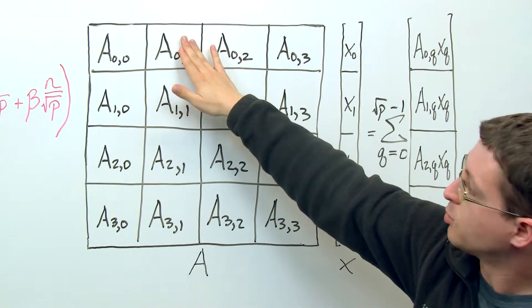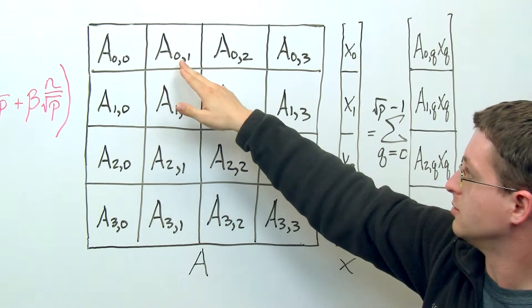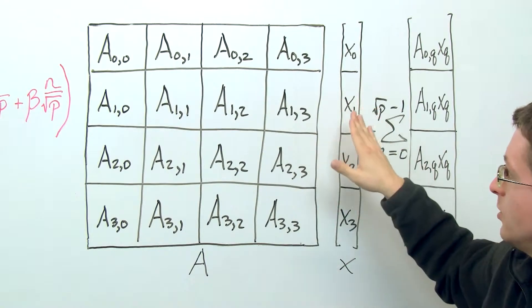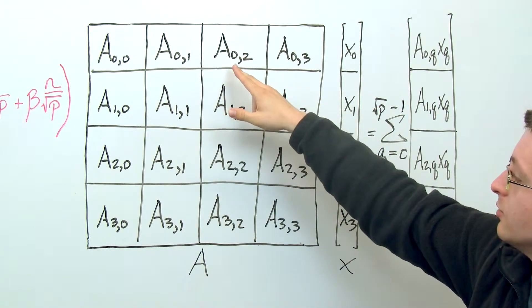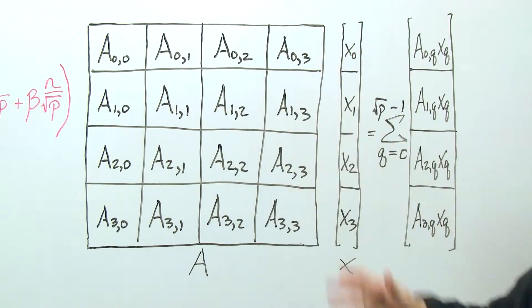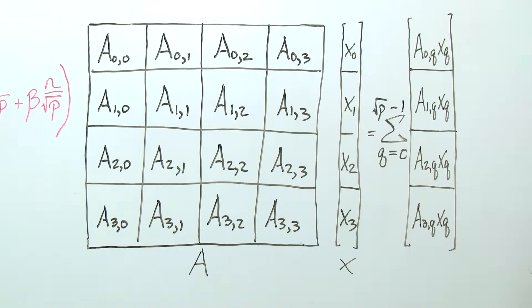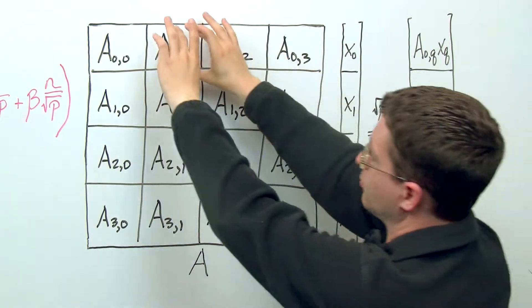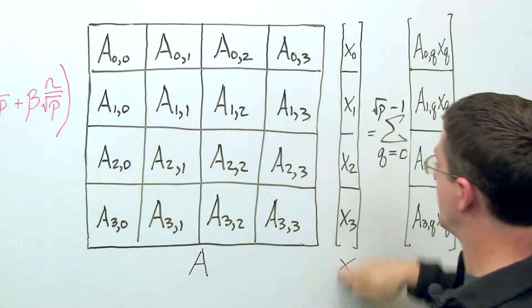So the process in this portion of the grid might compute A0,1 times x1, and then another process would have computed A0,2 times x2. And if these four processes sum their local contributions, we would have the result of this row panel of A times the entire vector x.